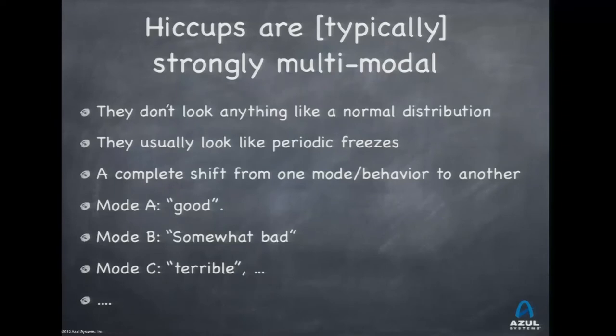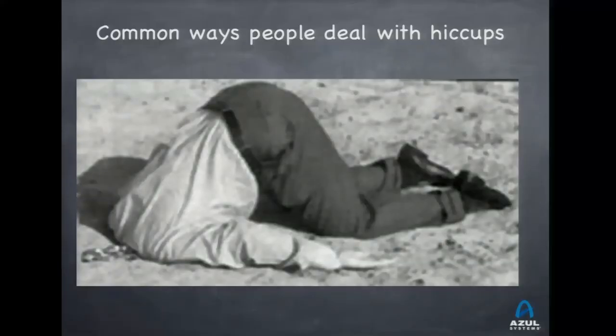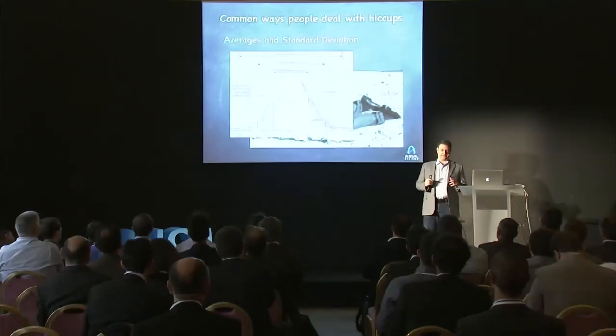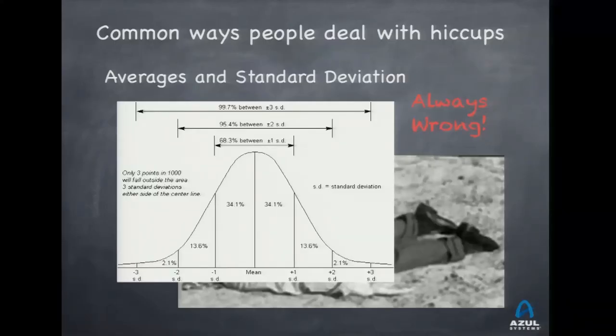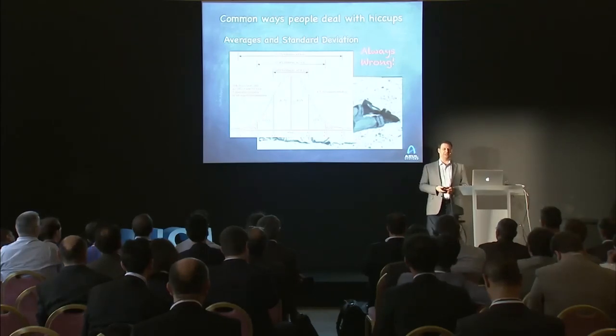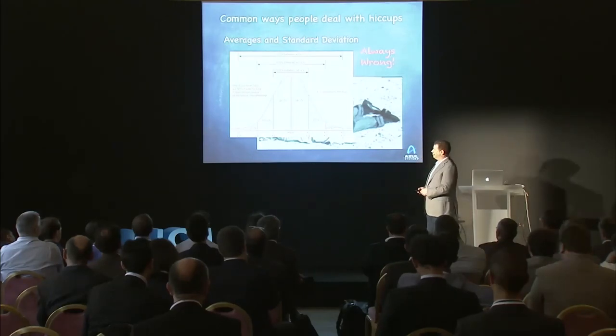A common way to deal with hiccups is to take your calculator and produce standard deviation numbers — a great way of completely ignoring the actual behavior and giving yourself wishful thinking results. This is virtually always wrong. A simple sanity check: if the maximum in your results is more than five standard deviations from the median, the standard deviation is meaningless. I've virtually never seen a software system where that ratio isn't bigger than that.